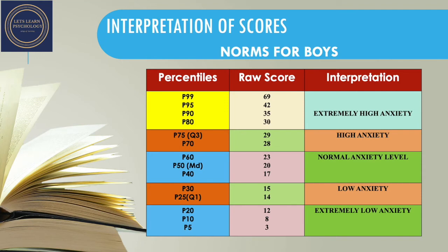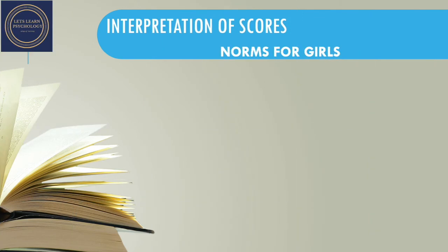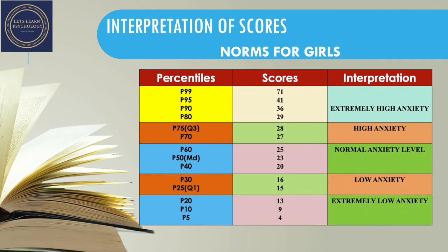The raw score needs to be converted into percentiles and interpreted accordingly. There are five categories of anxiety levels, and norms for boys and girls are different. For example, if the raw score is 26 — which is more than 23 (P60) and less than 28 (P70) — the person falls under the 70th percentile, meaning this person is suffering from high anxiety. Norms for girls are taken up similarly and raw scores are converted into percentiles and interpreted accordingly.